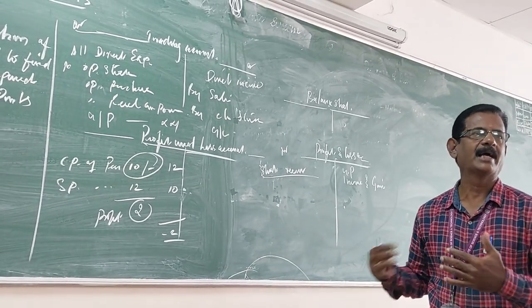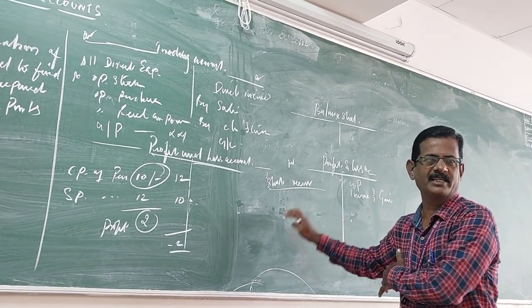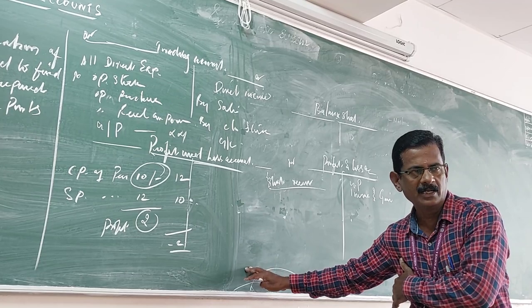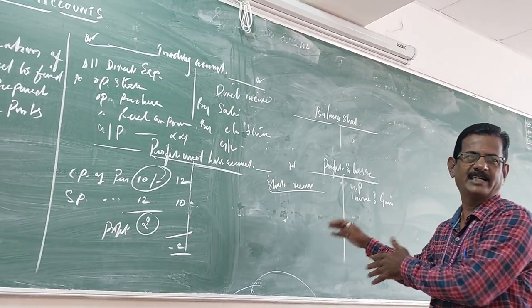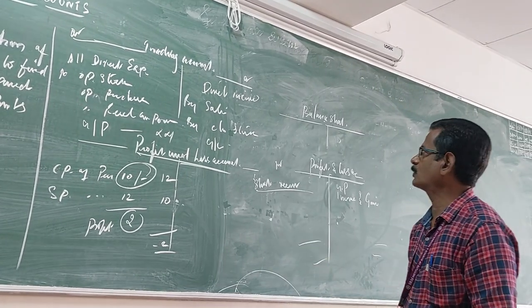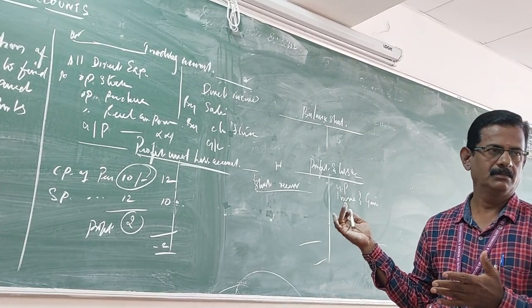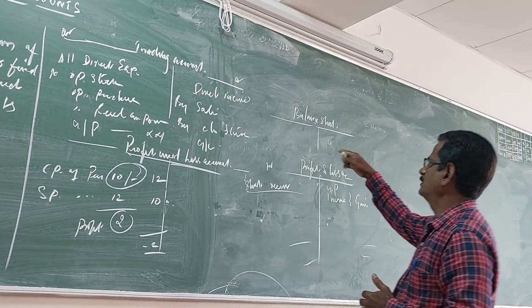Finally, if the excess of credit over debit, that will give net profit, opposite is net loss. Finally the net profit will transfer to that balance sheet.